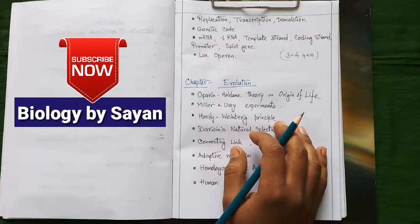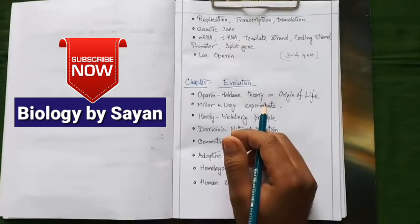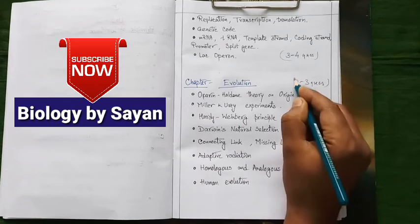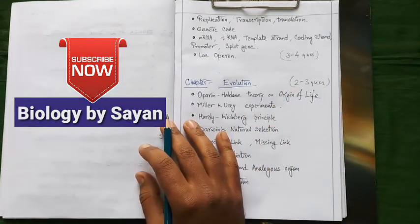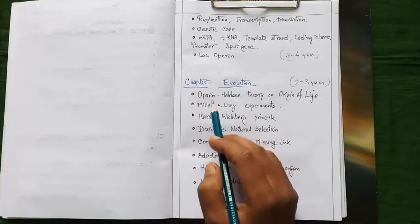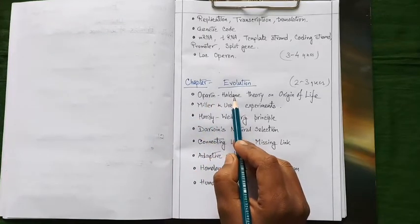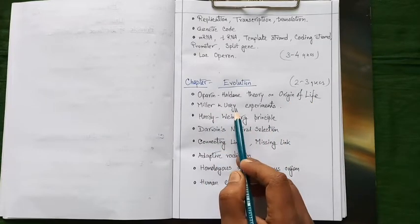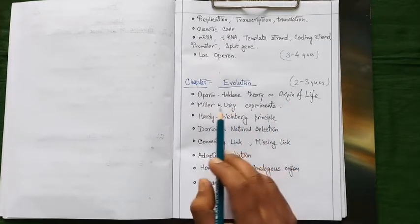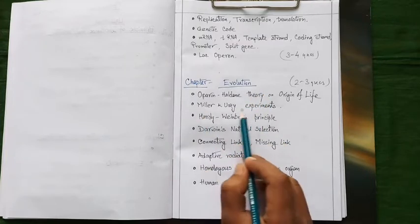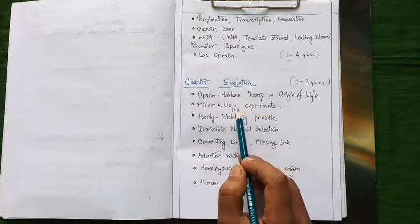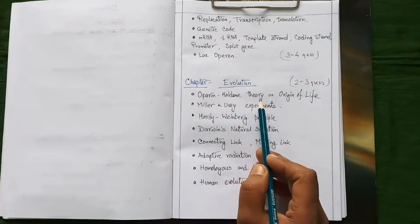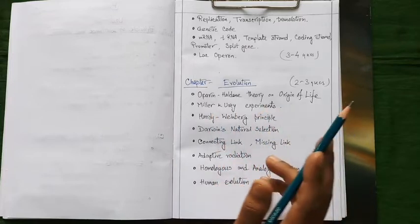Next we will move to our next chapter. Our next chapter is evolution. You may expect two to three questions from this chapter. Let's find different important topics under this chapter. Our first topic is Oparin and Haldane theory on origin of life. Next Miller and Urey experiment. You have to put special emphasis on this particular topic because Miller and Urey experiment actually establish or prove the Oparin-Haldane theory. So you need to prepare this question very carefully with diagram.